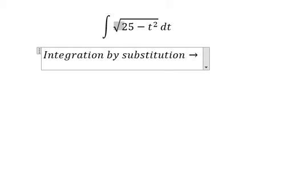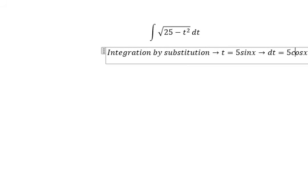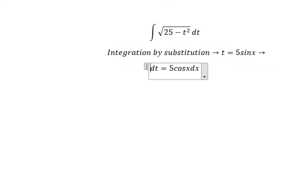In here we have t equals to 5 sine x, so that we get dt equals to 5 cosine x dx. And now we can change this one.